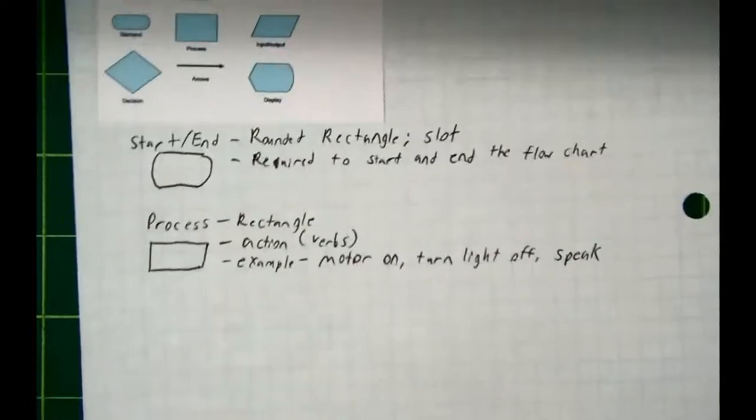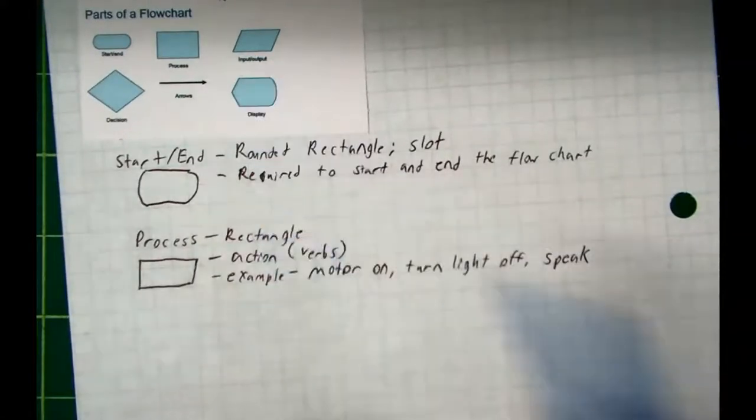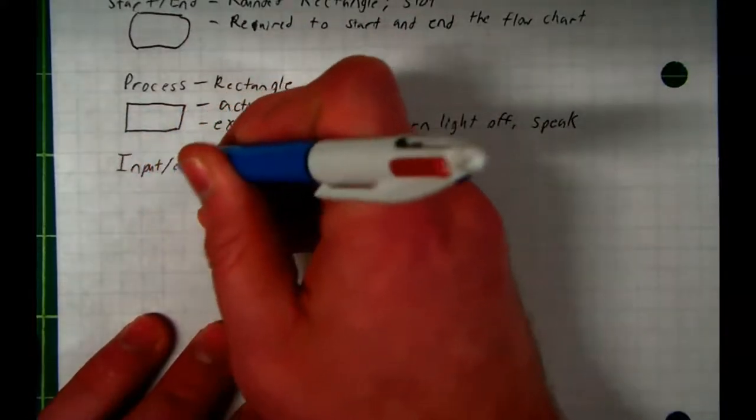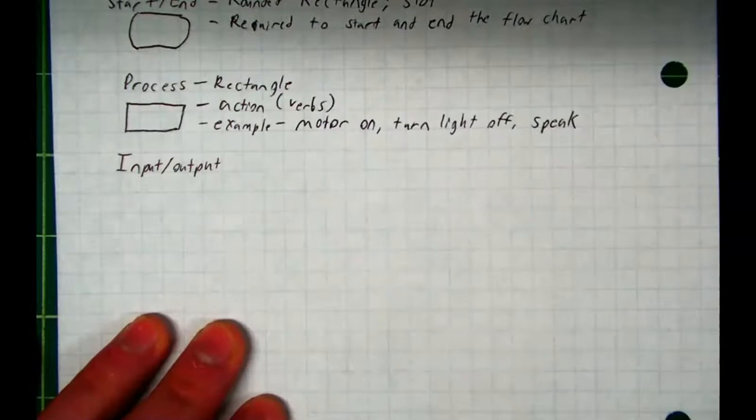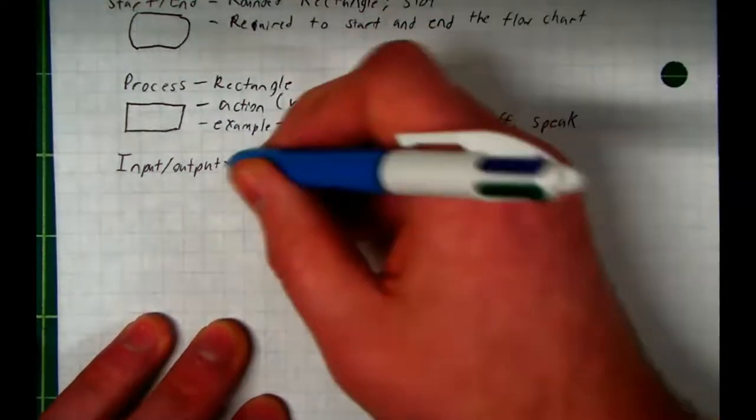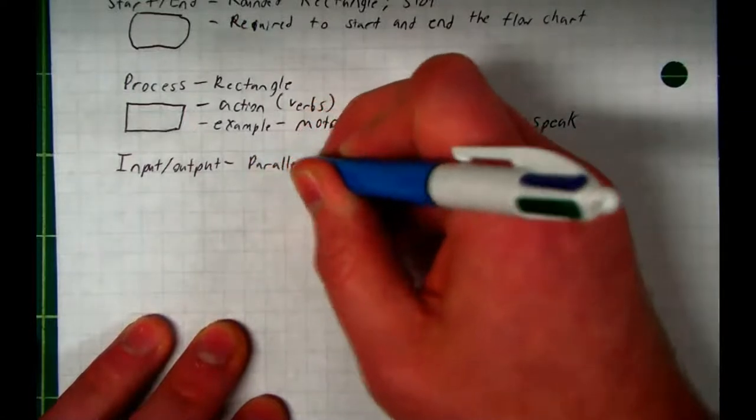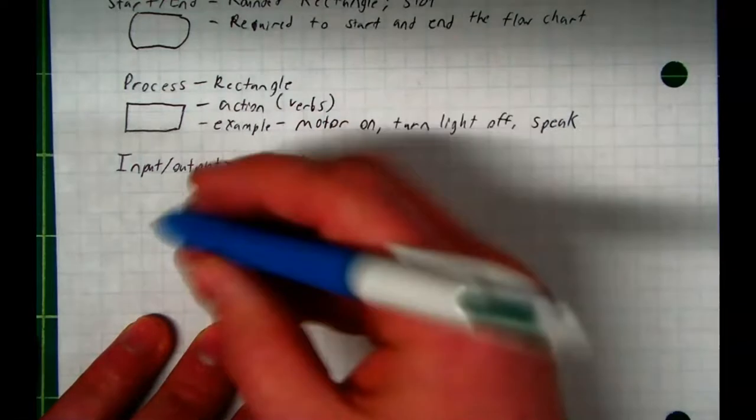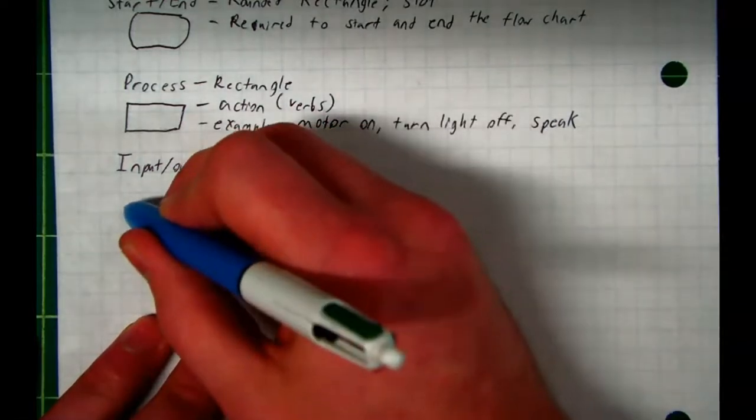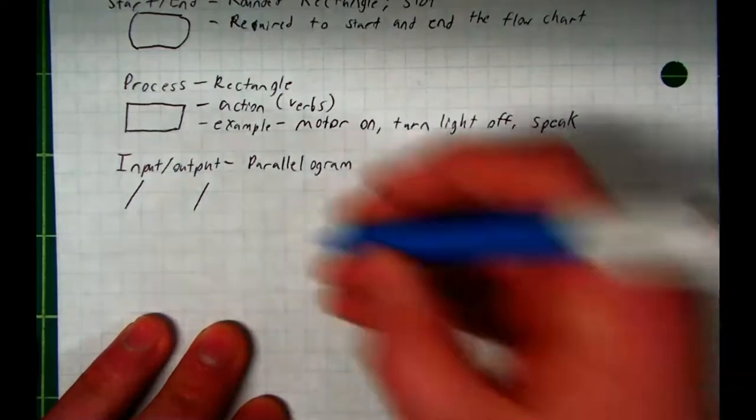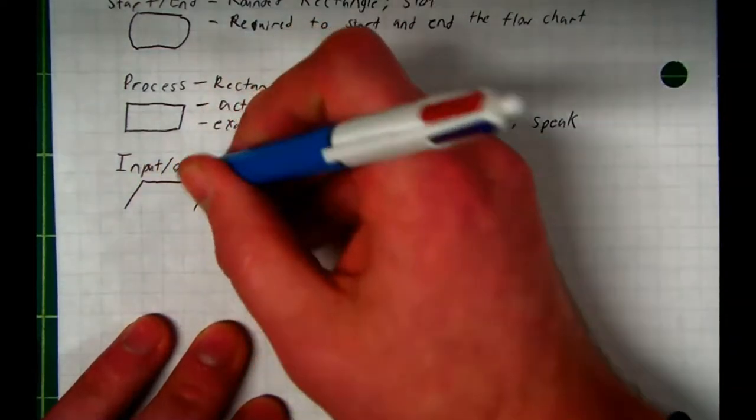If you look back up here, the next one we're going to talk about are inputs and outputs. Inputs and outputs, the shape you use for them are parallelograms. So to draw a parallelogram, just draw yourself two parallel lines next to each other and then connect them with horizontal lines.